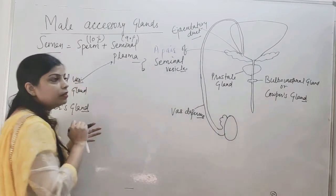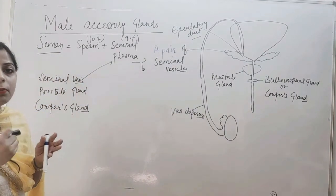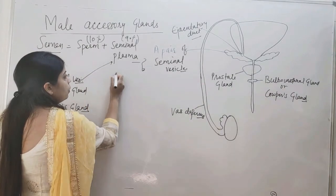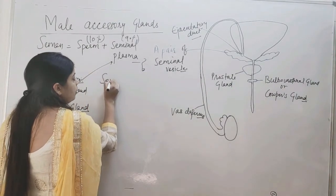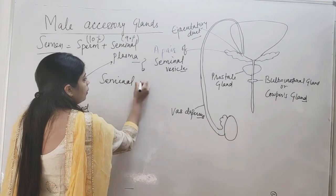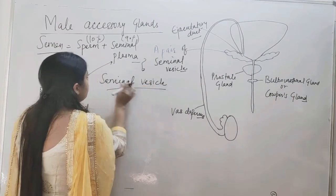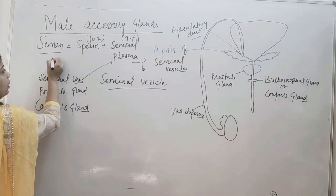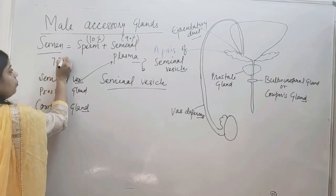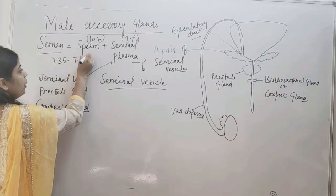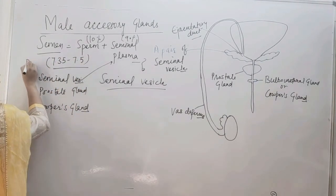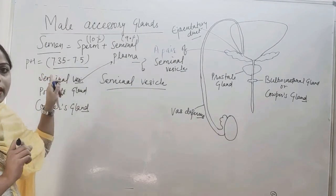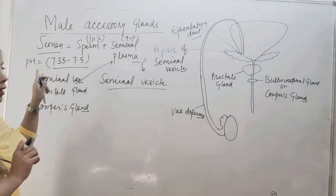Let us discuss about the seminal vesicle. The pH of semen is 7.35 to 7.5, which is an alkaline pH. The seminal vesicle is present just beneath the urinary bladder, and the fluid it contains is called seminal fluid, which has a pH of around 7.4.